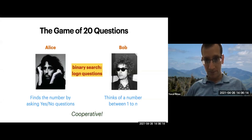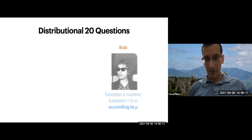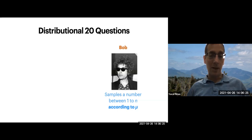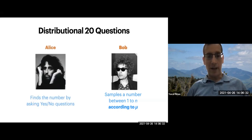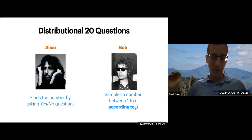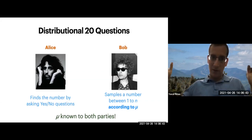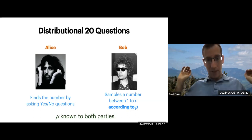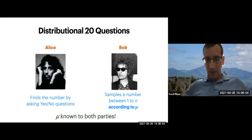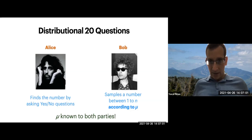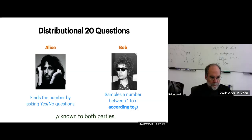What does the distributional version mean? There is some probability distribution mu known to both players. Bob samples the number between 1 and n according to this probability distribution mu. Alice, who knows mu, attempts to find this unknown number. Her goal is to minimize the expected number of questions. Bob doesn't lie - it's a cooperative game. What's the optimal number of questions that Alice needs to ask on average? The binary entropy of mu.